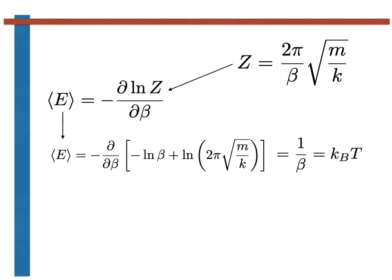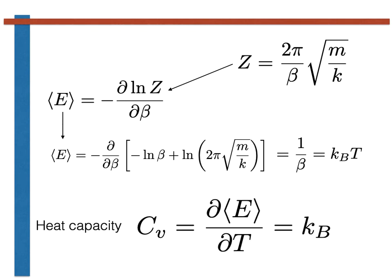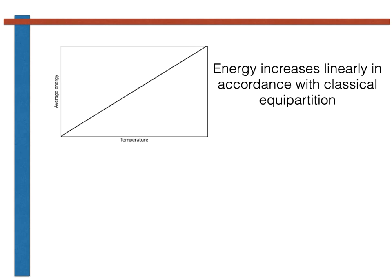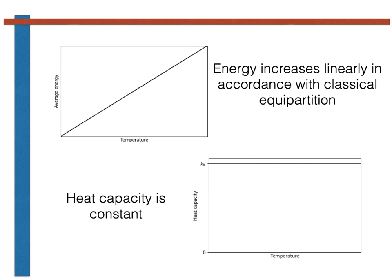If we have the average energy as a function of temperature, we can also derive an expression for the heat capacity of the system, as the heat capacity is just the derivative of the average energy with respect to temperature. The heat capacity for a harmonic oscillator is thus equal to Boltzmann's constant. Let's take a moment to consider the results that we have just derived. If we have a 1D harmonic oscillator, the average energy increases linearly with temperature. Furthermore, the gradient of this energy graph is constant and is equal to the heat capacity of the system, which is Boltzmann's constant.